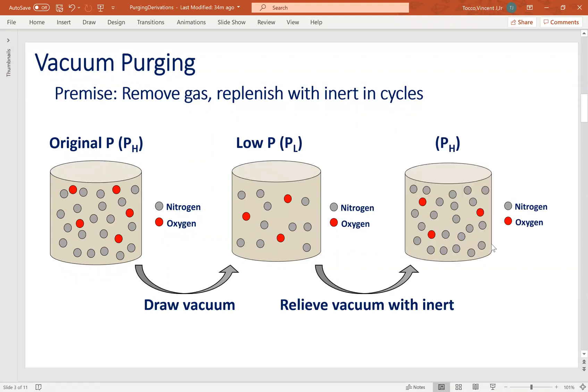In step two, we replenish the gas with fresh, pure, inert. Here we again assume that volume and temperature are constant and the number of moles inside the vessel increases as pressure increases.